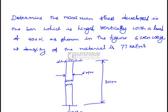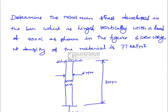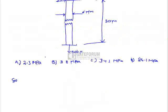Determine the maximum stress developed in the bar which is hinged vertically with a load of 900 N as shown in the figure. Given weight density of the material is 77 kN per m³, and this is the given bar of diameter 6 mm carrying a load of 900 N. The bar is of length 30 m. The stress developed in the bar equals the total weight per cross sectional area of the bar.